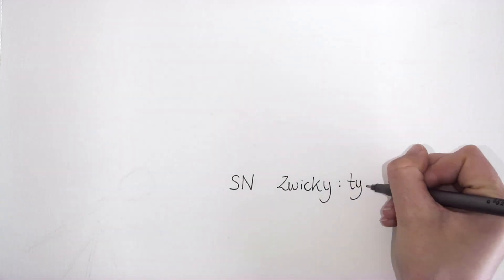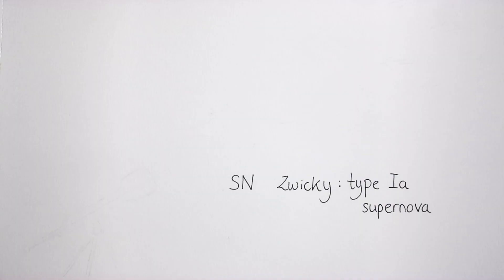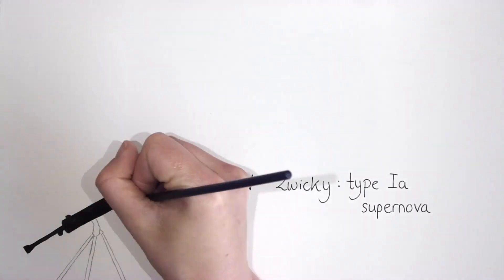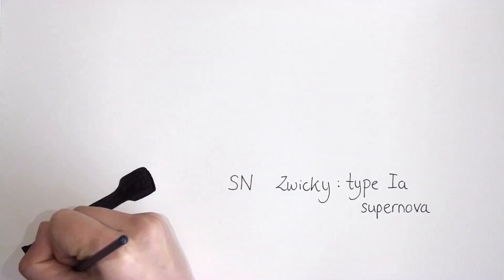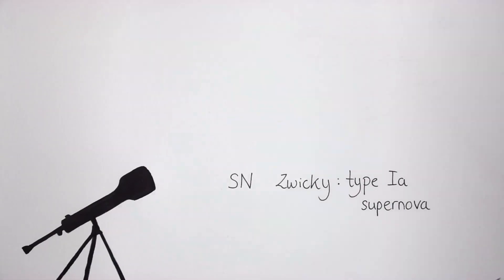Supernova Zwicky belongs to a special class of supernovae called Type Ia supernovae. These stellar explosions always occur in a similar way, giving them a similar brightness. Type Ia supernovae are an important tool for measuring cosmic distances.